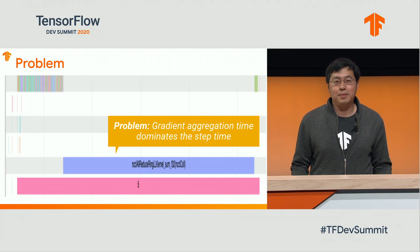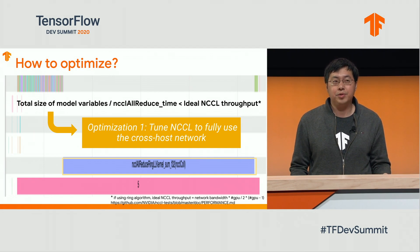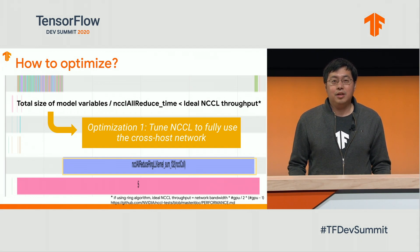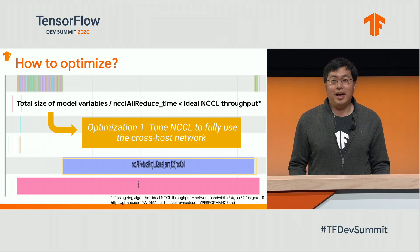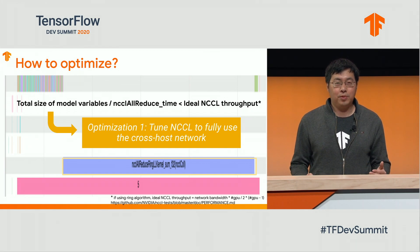So how do we resolve this and optimize training performance? Here come the three optimizations. For the first optimization: from the profiler, you get the total time used in NCCL AllReduce. And knowing your model's total variable and gradient size, you can calculate your NCCL AllReduce throughput. Knowing how many machines and GPUs you have, and following the NVIDIA NCCL tuning guideline, you can calculate the ideal NCCL throughput. In this case, we found that the real NCCL AllReduce throughput is much smaller than the ideal, so the first optimization is to tune NCCL to fully utilize the underlying cross-host network.